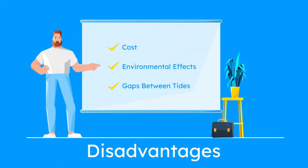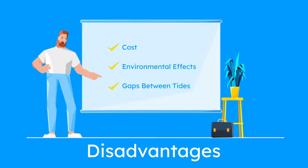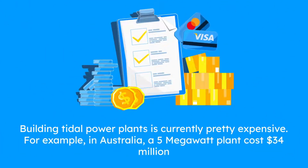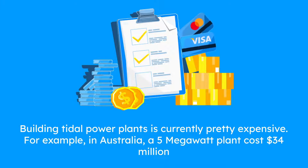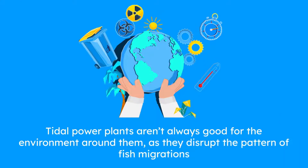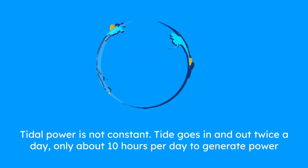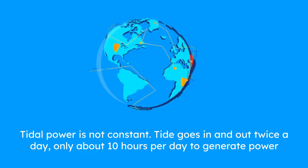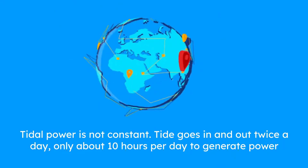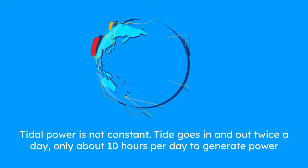Disadvantages include cost, environmental effects, and gaps between tides. Building tidal power plants is currently pretty expensive — for example, in Australia, a 5 megawatt plant cost 34 million dollars. Tidal power plants aren't always good for the environment around them, as they disrupt the pattern of fish migrations. The power is not constant: the tide goes in and out twice a day, leaving only about 10 hours per day when power can be generated.